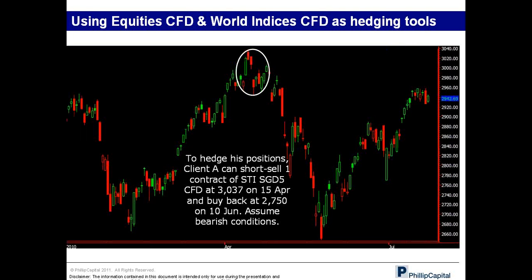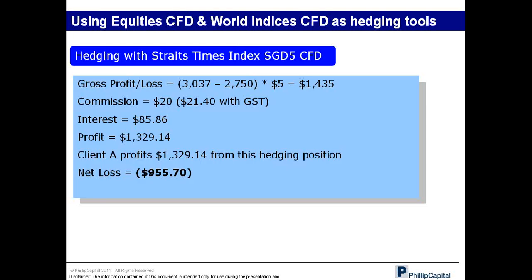World index CFDs allow you to hedge your position by shorting the STI and then buying back cheaper. The calculation here shows that by shorting the STI during a bearish market condition, you are able to make a profit of $1,435, which offsets back against the $2,000 loss. The $1,435 effectively protects the unrealized losses in your stock portfolio.